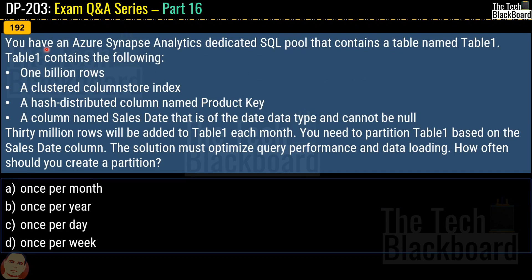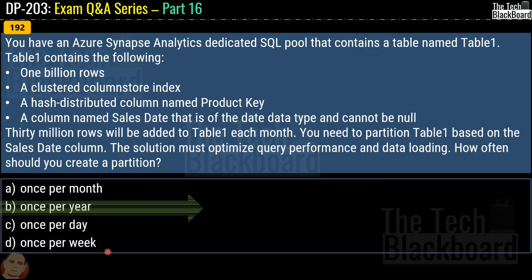Question number 192. You have an Azure Synapse Analytics dedicated SQL pool containing table 1, which has 1 billion rows, a clustered columnstore index, a hash-distributed column named product key, and a sales date column of date data type that cannot be null. 30 million rows will be added to table 1 each month. You need to partition table 1 based on the sales date column to optimize query performance and data loading. How often should you create a partition? The correct answer is once per year.